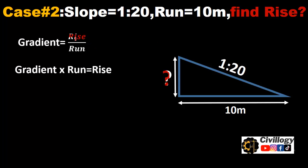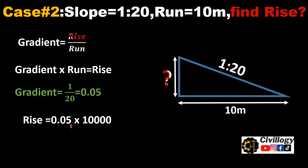And gradient, as you found in the previous slide, 1 divided by 20 is equal to 0.05. So putting the values in this equation, rise is equal to 0.05 multiply by 10,000. We will get 500 millimeters. So rise is equal to 500 millimeters.